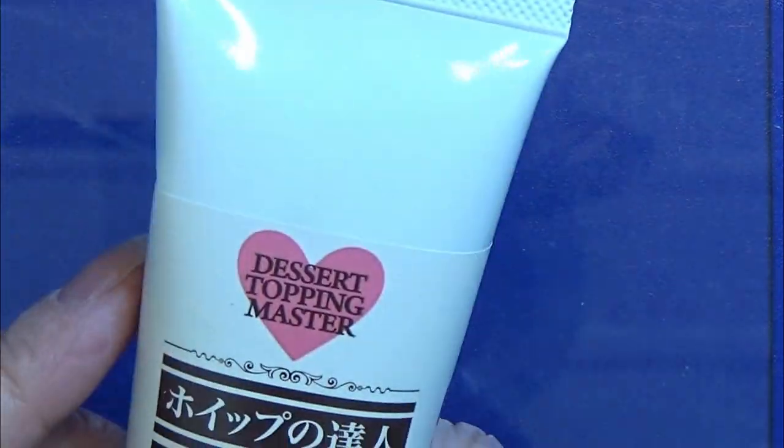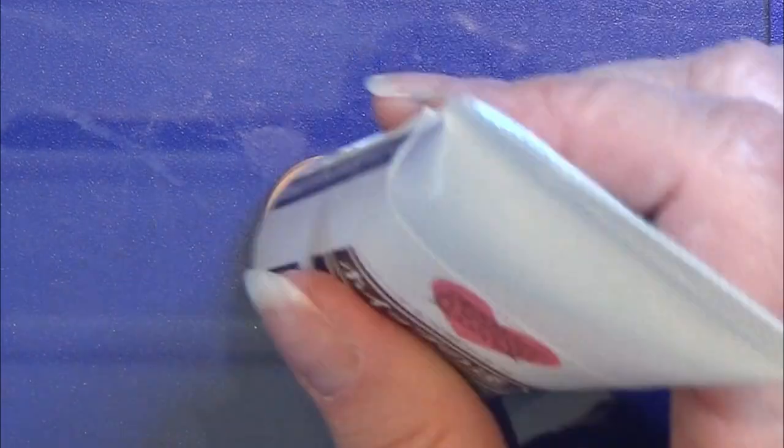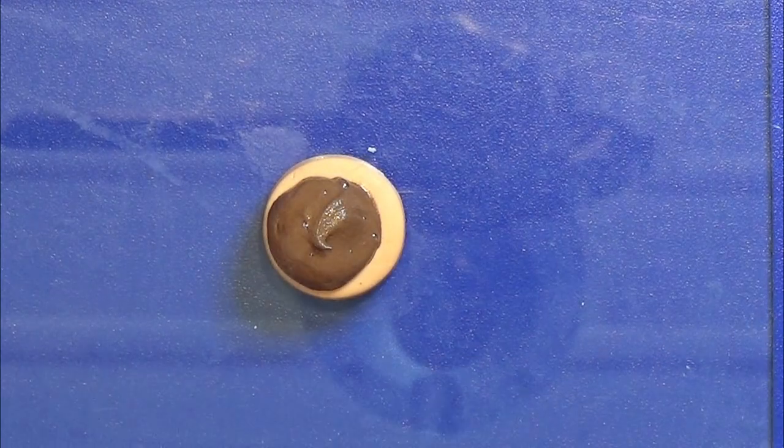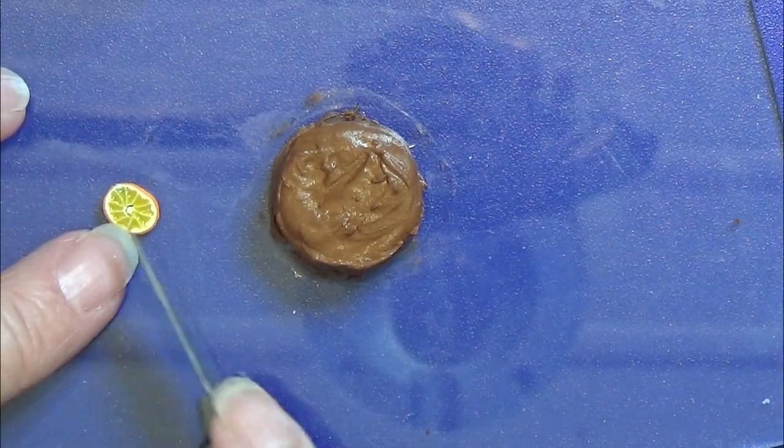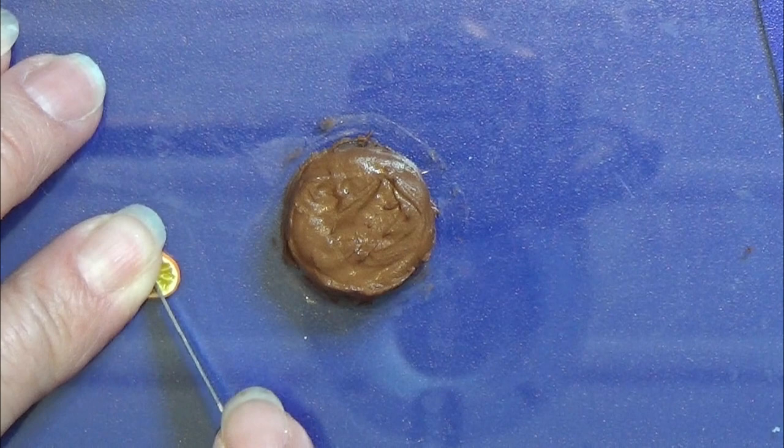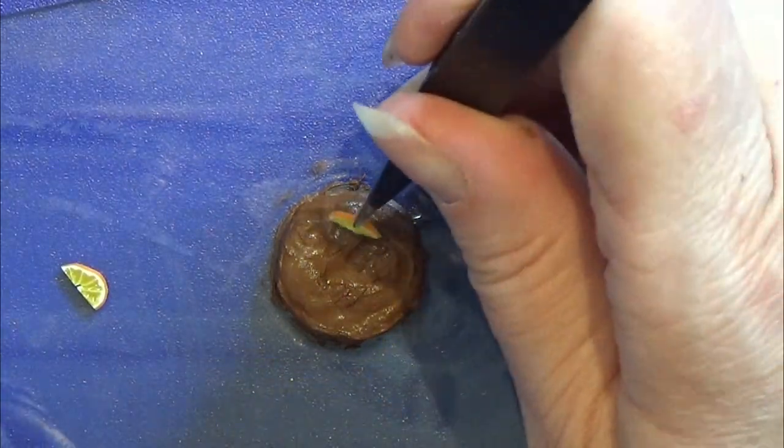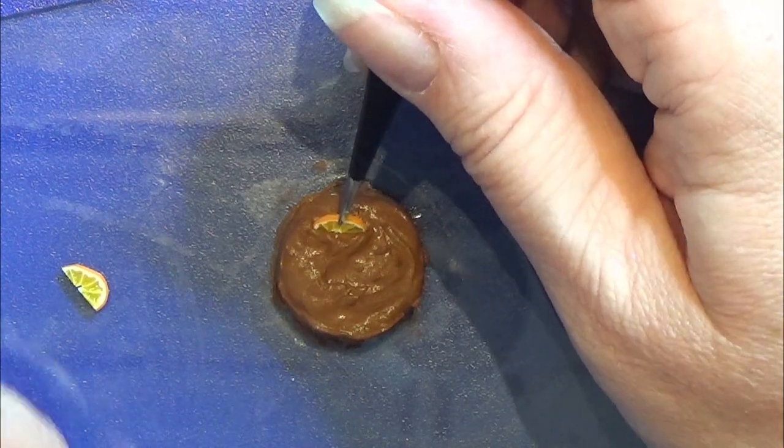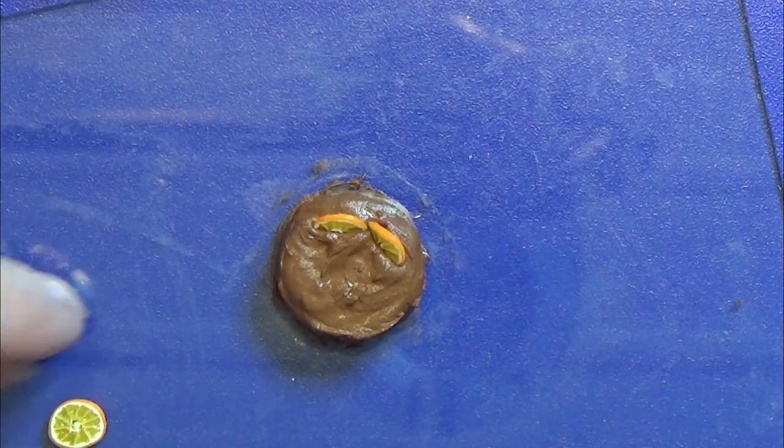Here is another one where I'm using the dessert topping master, and that's chocolate. Again, I'm just going to cover the whole cake with this. And here I still have the footage of how I decorated it, so I'm going to leave you to see that. I'm going to leave a link for all my canes in the info box below and at the end of this video.